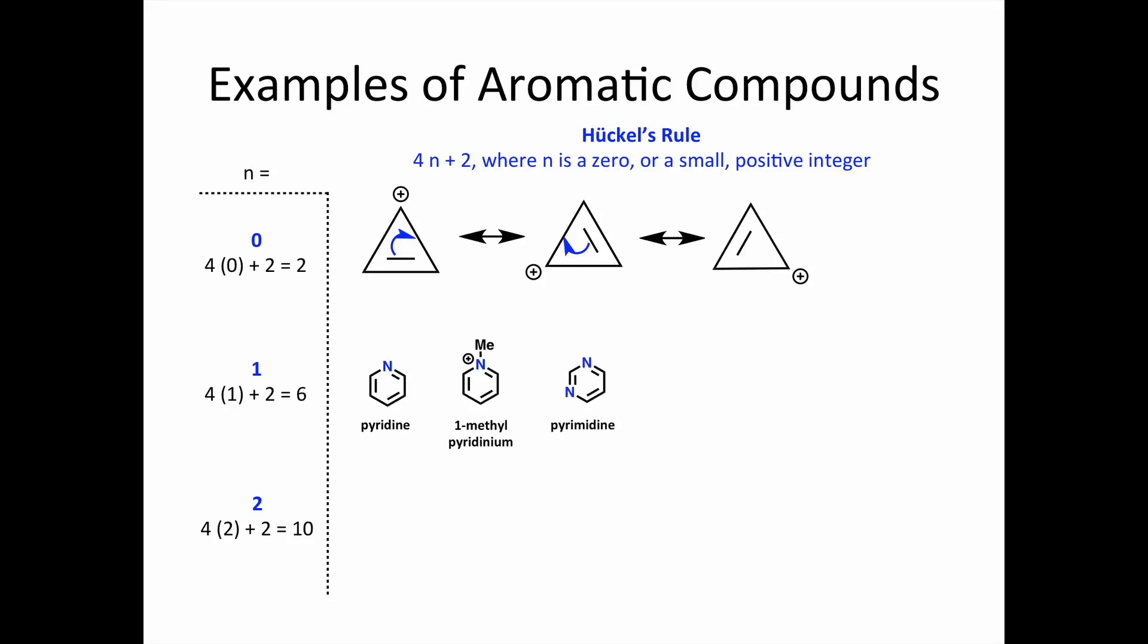Pyrimidine is another example. It has 2 orthogonal lone pairs and 3 double bonds in the ring making up the pi system. Pyrimidine rings are very important because they make up your DNA.